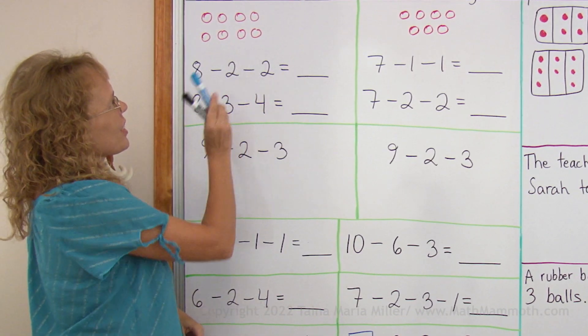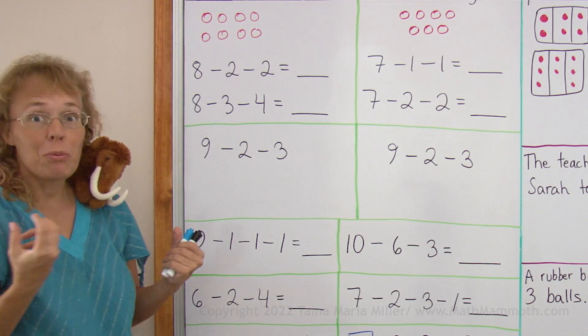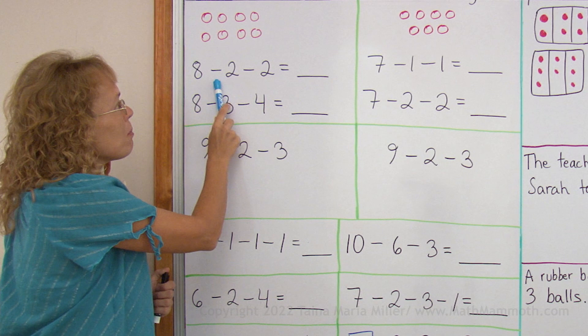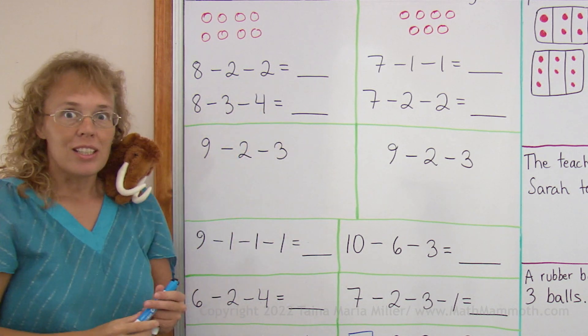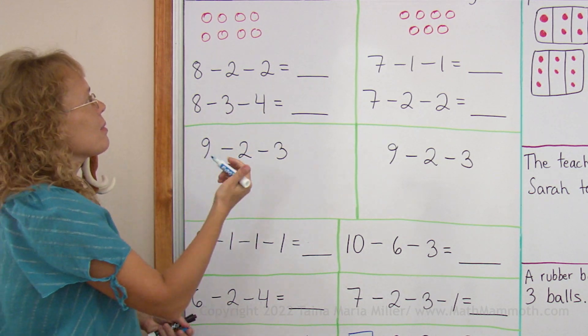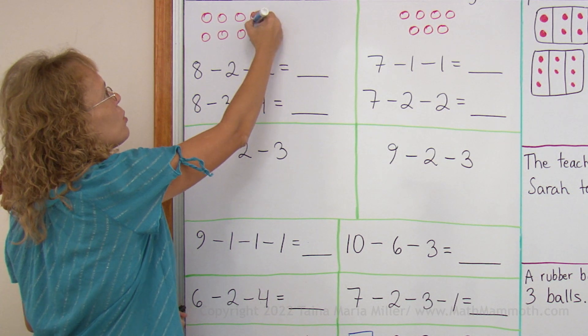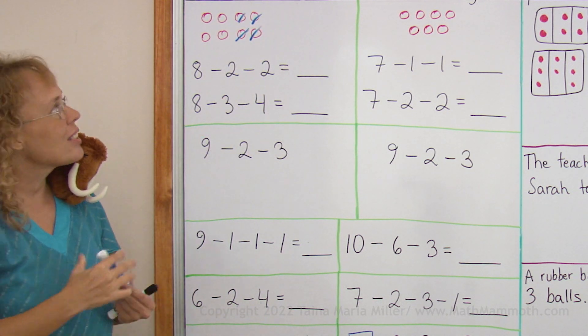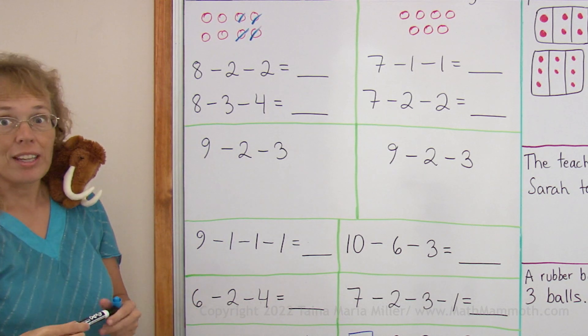Here's my first example. We have eight strawberries and we're gonna subtract 8 minus 2 minus 2. So that simply means that these two would go away, and another two would go away. So now we can see the answer, there would be 4 left.